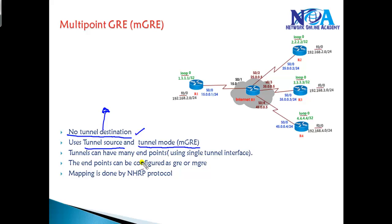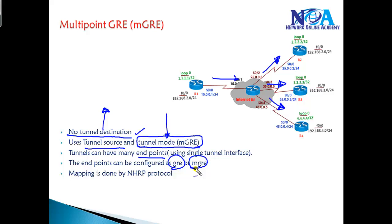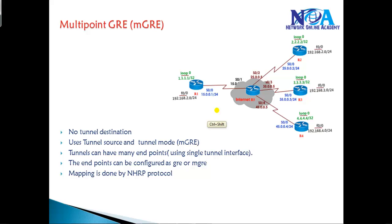In Multipoint GRE, there is no tunnel destination — instead we use the 'tunnel source' and 'tunnel mode' commands. A single tunnel can have multiple endpoints. When we configure 'tunnel mode GRE multipoint', the tunnel will have multiple endpoints. In my scenarios I'll be using three separate endpoints, meaning Router 1 connects to three different locations. These endpoints can be configured as either point-to-point GRE or Multipoint GRE. If you configure endpoints as point-to-point, it will only connect to that specific router and will not build dynamic tunnels between, say, Router 2 and Router 3.